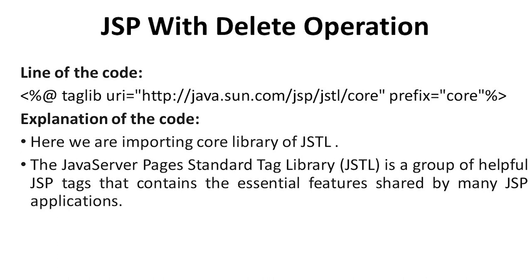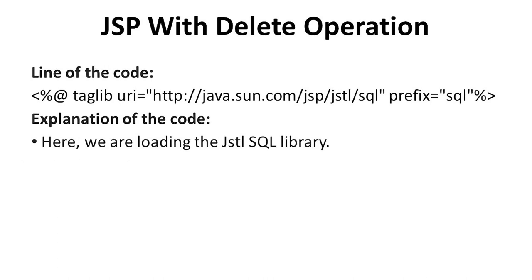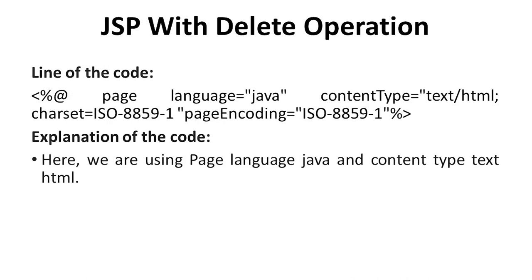The Java Server Pages Standard Tag Library (JSTL) is a group of helpful JSP tags that contains the essential features shared by many JSP applications. In the next line of code, we use @taglib uri equal to http://java.sun.com/jsp/jstl/sql with prefix 'sql'. Here we are loading the JSTL SQL library.